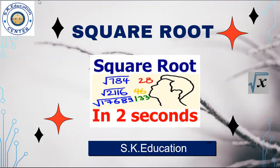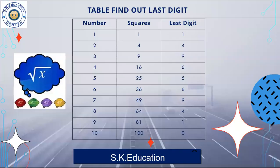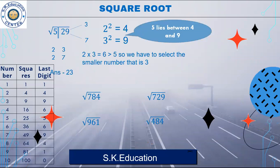Hello friends, I am Pratima Agrawal. I will take the video on square root. This is the easy way for square root. This is the table — find out the last digit. I will take one example: 529.